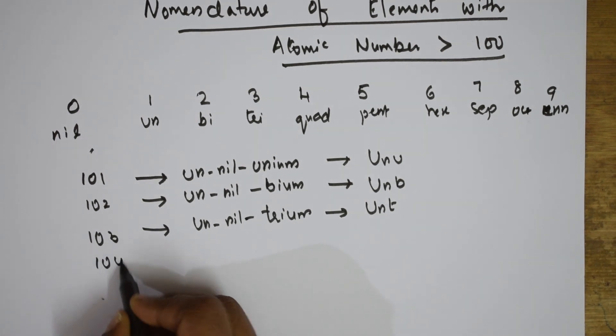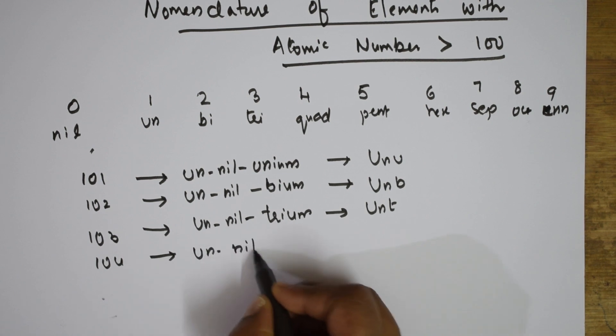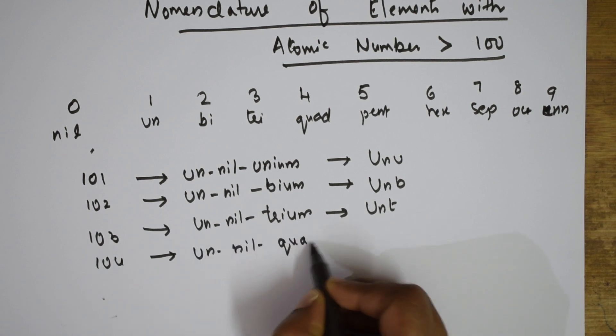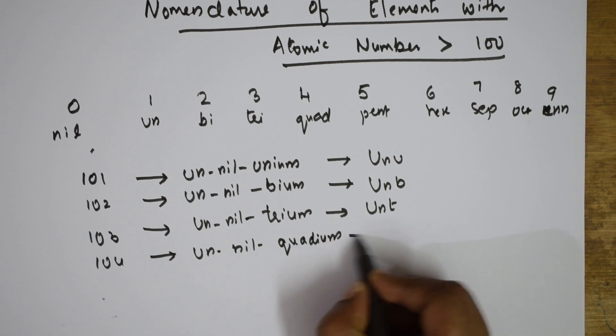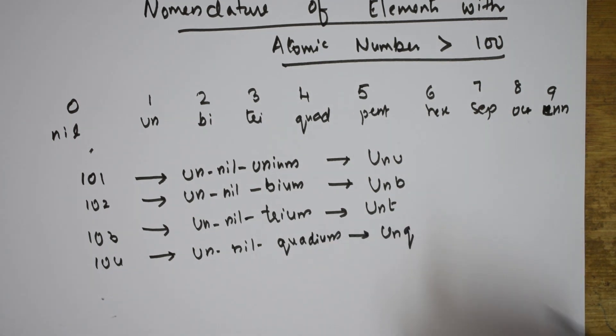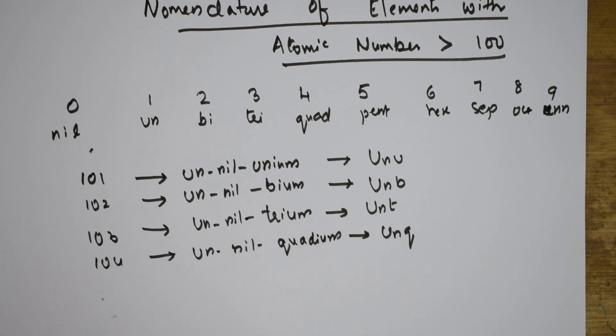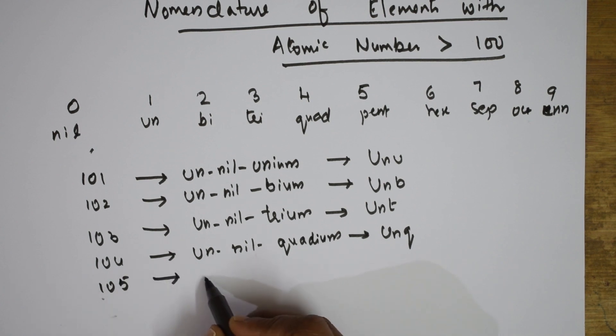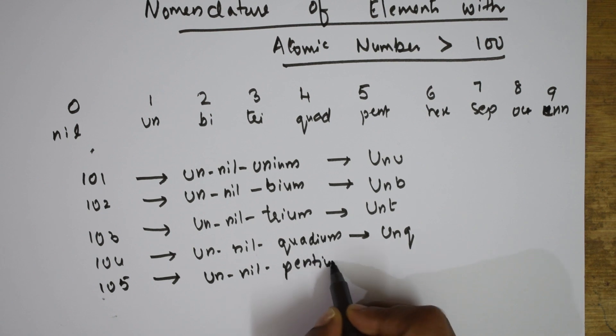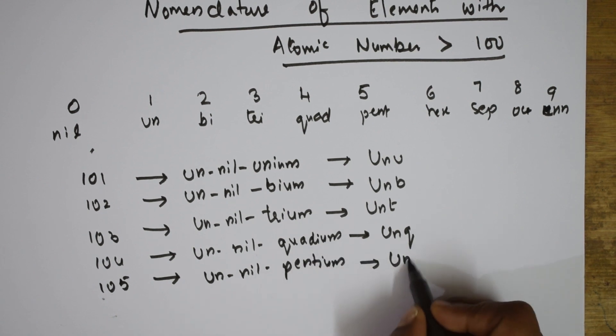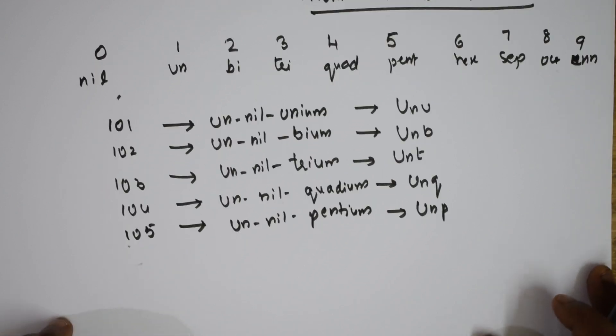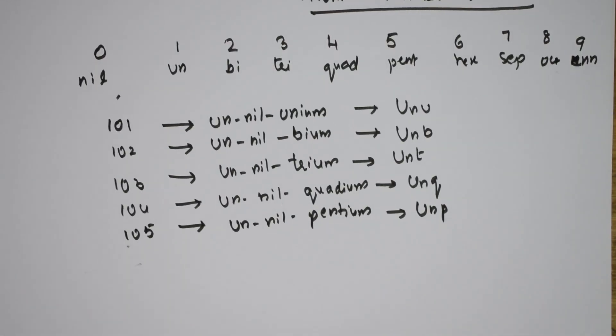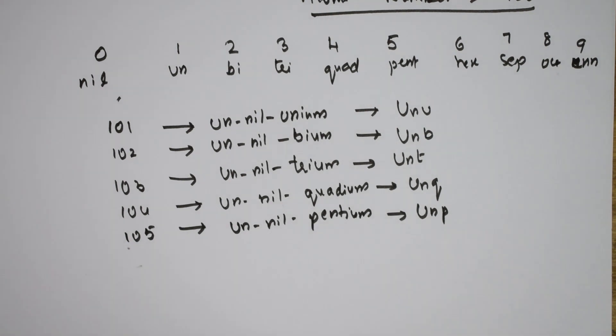Suppose if it is 104: un-nil-quadium, symbol Unq. For 105: un-nil-pentium, symbol Unp. Like that we will be writing the different compounds.